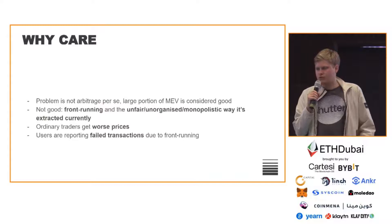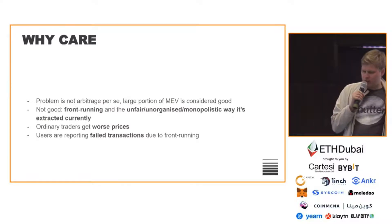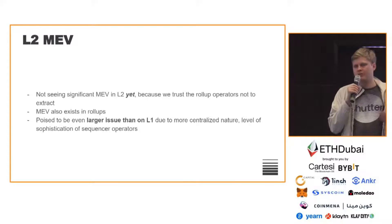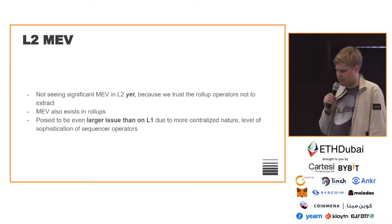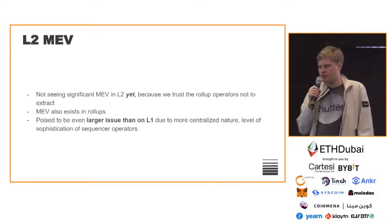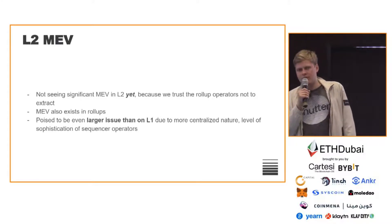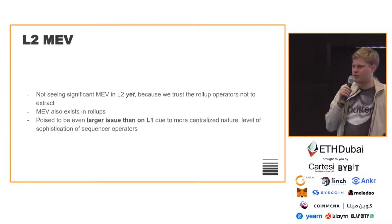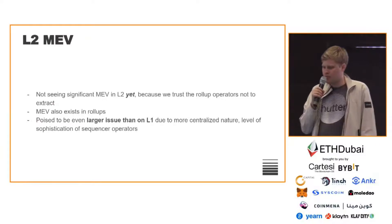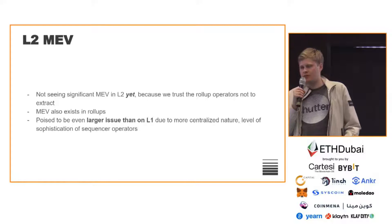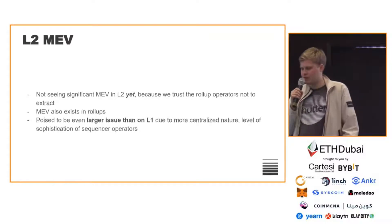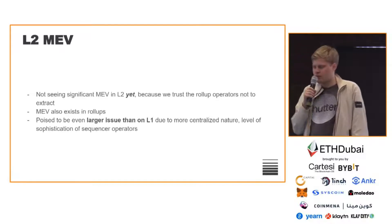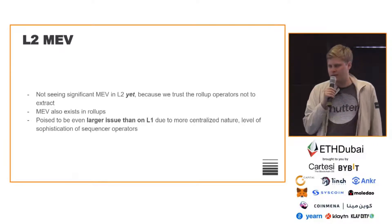That's the problem we're focusing on and want to solve — more concretely, worse prices and failed transactions. One more specific case is layer 2 MEV. People don't think about layer 2 MEV much yet because generally we're trusting the rollup sequencers not to extract MEV — they're big teams with something to lose. But that's not optimal; you don't want to trust your operator. MEV does exist in rollups and may become an even larger issue than on L1 because rollup sequencers are more sophisticated and more centralized.